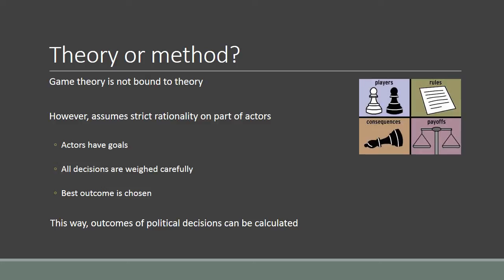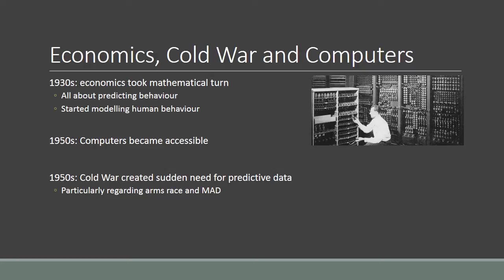By assuming those basic decision-making traits, game theory can calculate the outcomes of political decisions. Game theory originates from three processes coming together. First of all, the mathematical turn that economics took in the late 1930s, in which mathematics became the prime language for economic analysis, which spurred a whole range of new models of human decision-making — all about predicting the behavior of human actors.